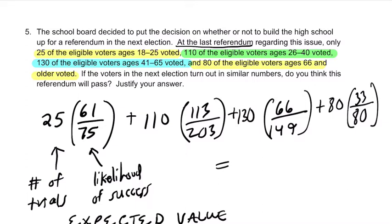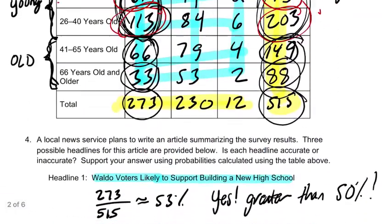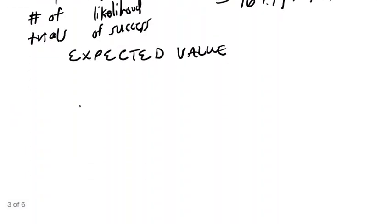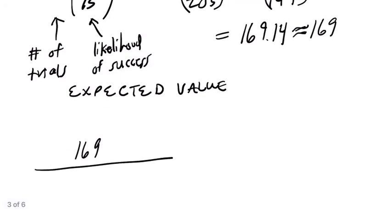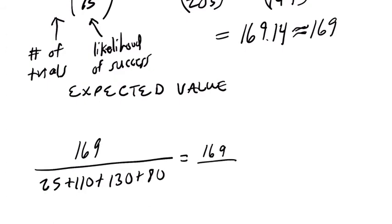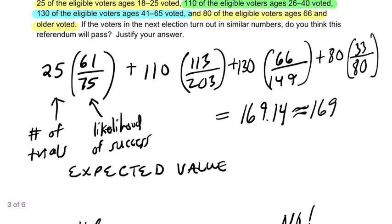Let me grab my notes on this problem. I've got 169.14, so about 169 yes votes. Now, do I expect it to pass? If you get 169 yeses — this is counting the same number of voters as the last referendum, so we add up all those amounts. You're getting 169 out of 345. Without even finding the exact value, the answer is no — I don't expect it to pass because this is less than 50%. We're not meeting that 50% threshold to help it pass. I hope this helped, thank you.